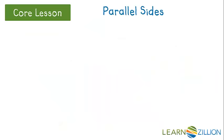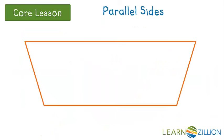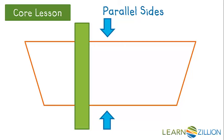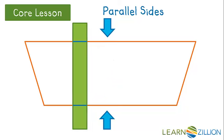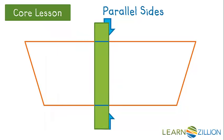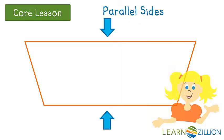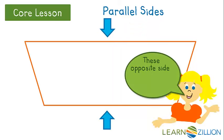How do I know if a shape has parallel sides? I pick two sides that are opposite from each other, like this top side and bottom side. If I were to measure the distance between each of these sides with a ruler or a piece of paper, no matter where I put it, the two sides would always be the same distance apart. Here is my slip of paper — I will mark the distance between my two opposite sides here and here. No matter where I move my paper, the distance apart stays the same. These opposite sides are the same distance apart, which makes them parallel.